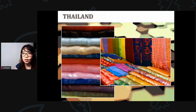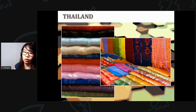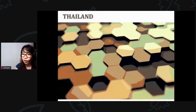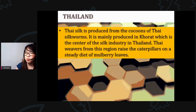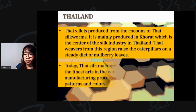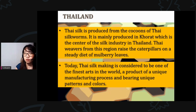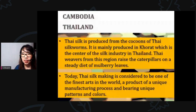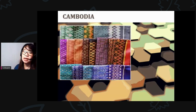Let's start with Thailand. Thailand is one of the most popular countries when it comes to silk weaving. Thai silk is produced from the cocoons of Thai silkworms, mainly produced in Khorat, which is the center of the silk industry in Thailand. Thai weavers raise caterpillars on a diet of mulberry leaves. Today, Thai silk making is considered one of the finest arts in the world, with unique manufacturing processes, patterns, and colors.